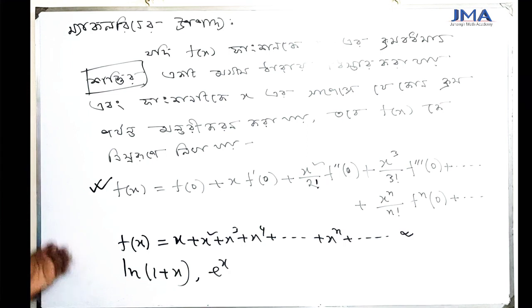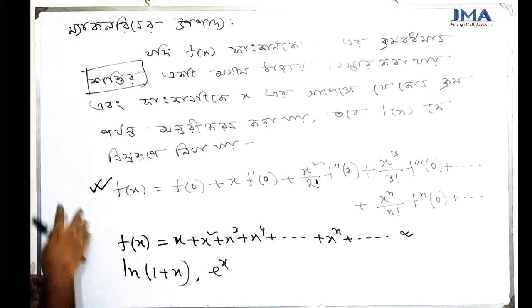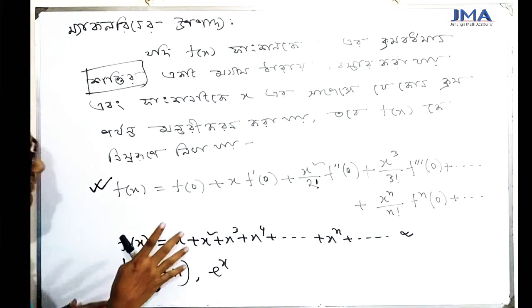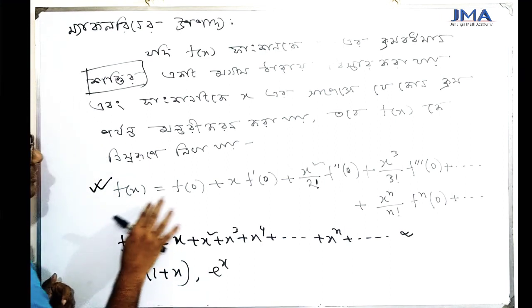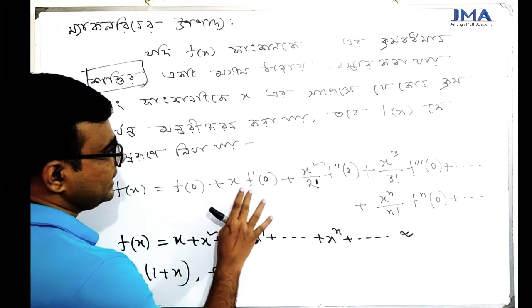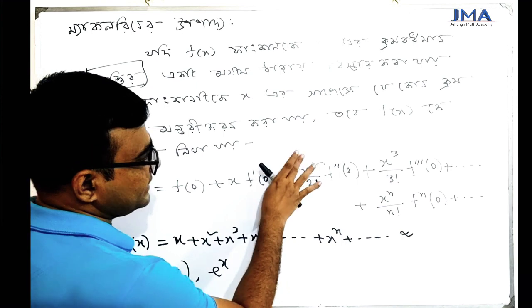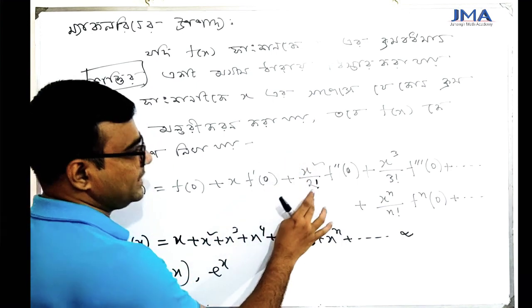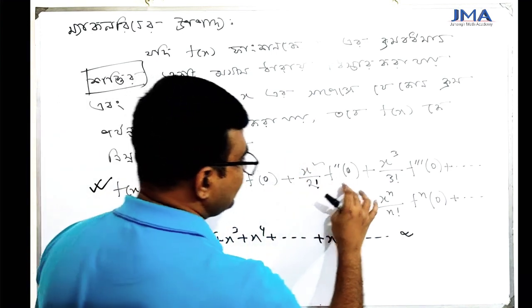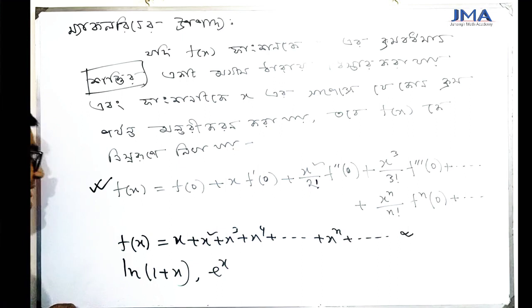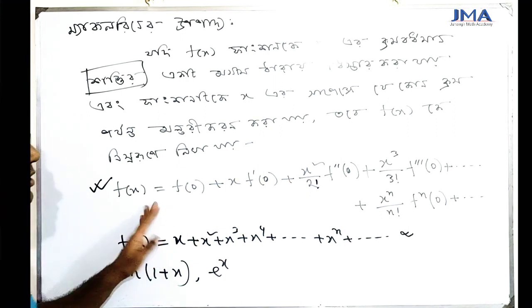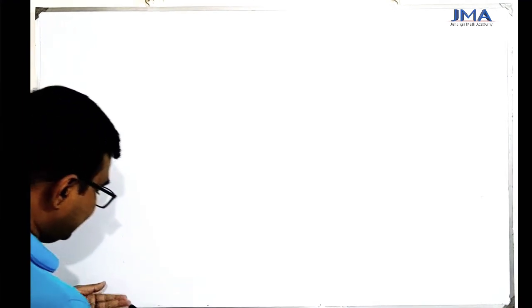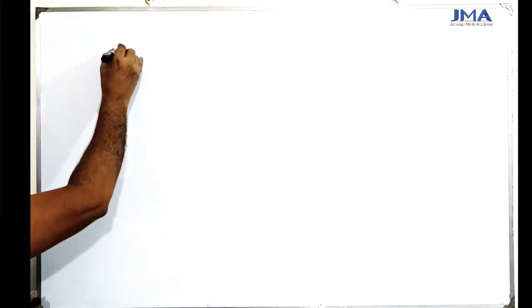So we can see how the Maclaurin series is expressed: f of x equals f of 0 plus x times f prime of 0 plus x squared by 2 factorial times f double prime of 0. This is the proof of the Maclaurin series expansion.